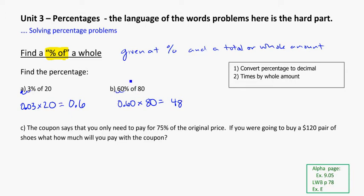That makes sense if you think about it. 60% is a little higher than 50%, and 50% would be half of 80, which is 40. So 60%, a little higher than that, seems about right.